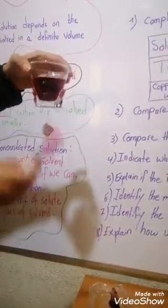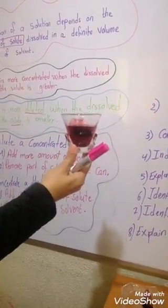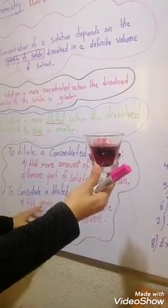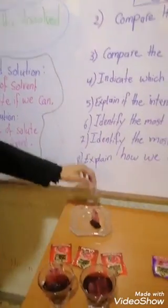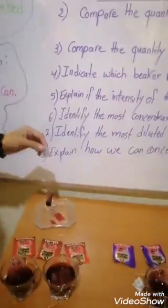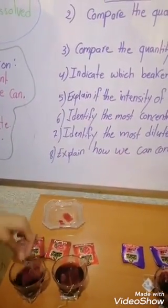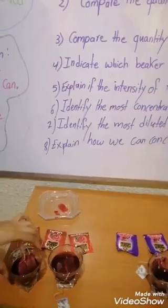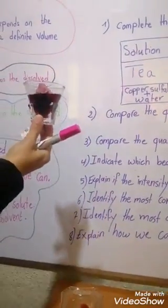If we want to concentrate a diluted solution, we must add more solute. For example, we put another colored tea bag in order to concentrate this solution.